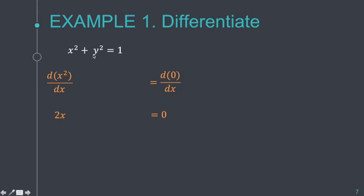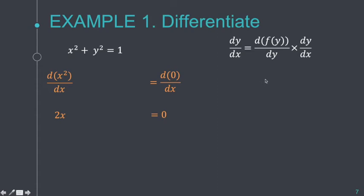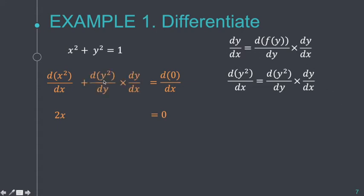The second term has a y — that's an important thing to look at. If the term being differentiated has a y, we have to apply the chain rule. Going back to our important rule: the derivative of f(y), in this case f(y) = y², is the derivative of y² with respect to y, and then we affix dy/dx. So this gives us the derivative of the second term.